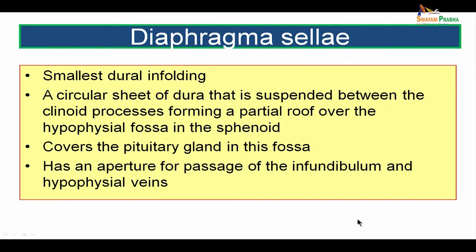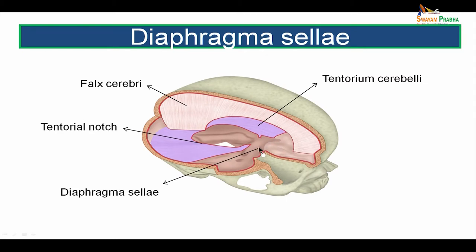The fourth dural infolding is the diaphragma sellae, which is the smallest of the dural infoldings. It is a circular sheet of dura suspended between the clinoid processes, forming a partial roof over the hypophysial fossa of the sphenoid bone. It covers the pituitary gland and has an aperture for passage of the infundibulum and hypophysial veins. The picture shows the diaphragma sellae as a small circular fold of dura mater attached between the clinoid processes.